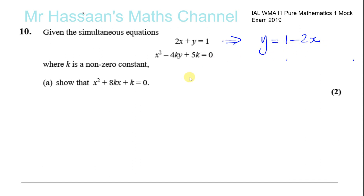Another reason why we're going to choose y is because we have to show that x squared plus 8kx plus k equals 0. So we want to have an equation with just the x terms and not y. We express y in terms of x and then substitute that expression instead of y in the second equation.